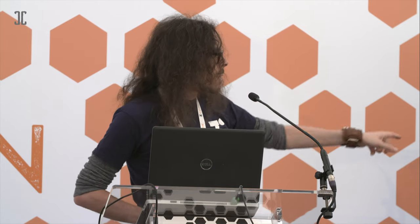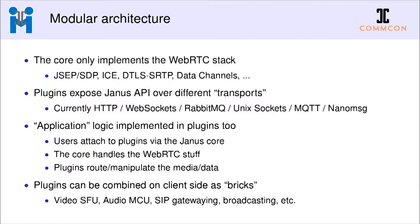Most importantly, the application logic — what to do with the media that you get from a browser or what to send back — is implemented in different media plugins. People connect to these plugins via the Janus core using the API, the core takes care of the WebRTC stuff and terminates the WebRTC connection, and plugins have access to the plain RTP and RTCP packets so they can do something with it — forwarding them, implementing an SFU, or whatever makes sense. These plugins can be used as bricks you can combine to implement a more complex application.